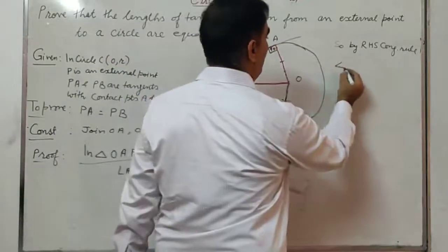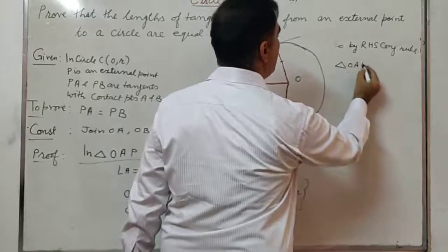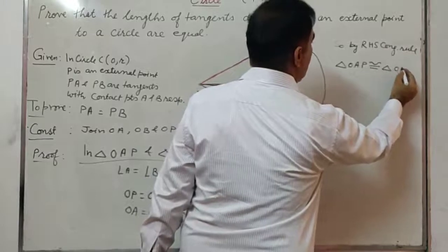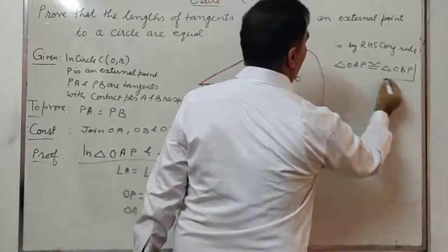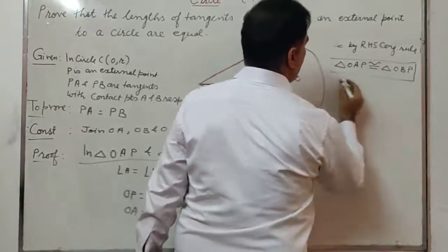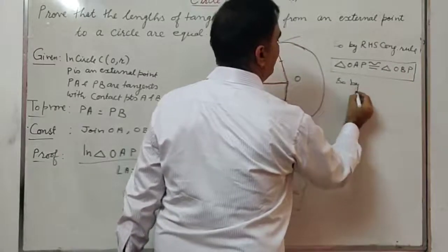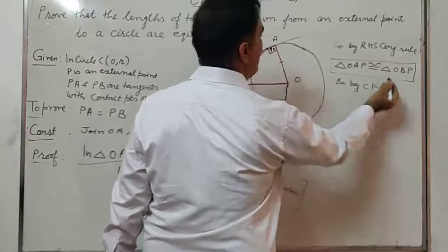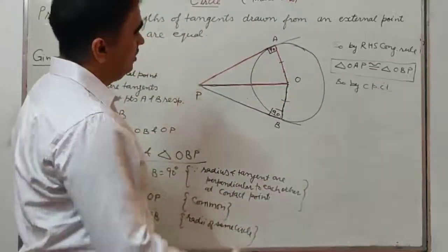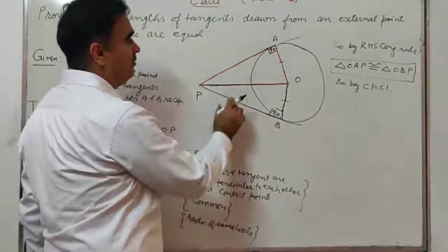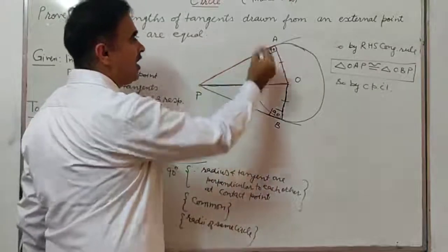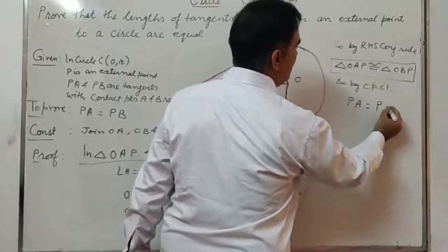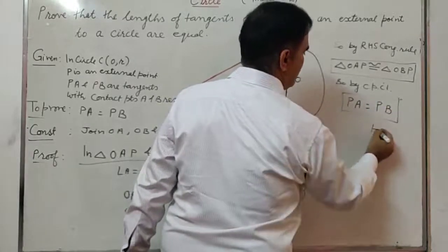By RHS congruence rule, triangle OAP is congruent to triangle OBP. So by CPCT — corresponding parts of congruent triangles are equal — all sides are equal, which means PA equals PB. Hence proved.